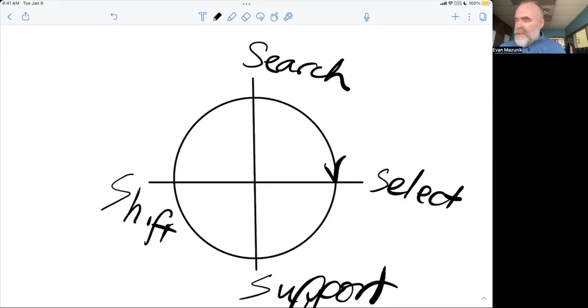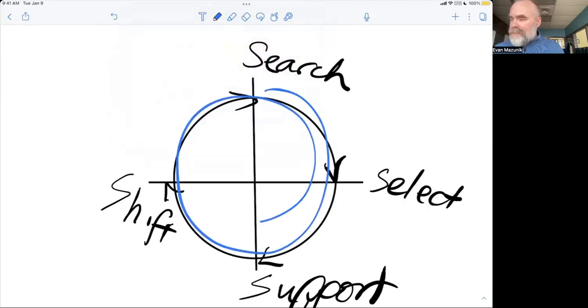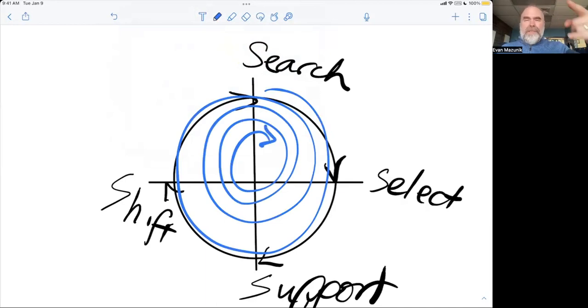And for me this is a cycle. Like I said, this may happen in milliseconds, and once you're going around and around, this happens around and around, and you're always spiraling through search, select, support, shift, search, select, support, shift.